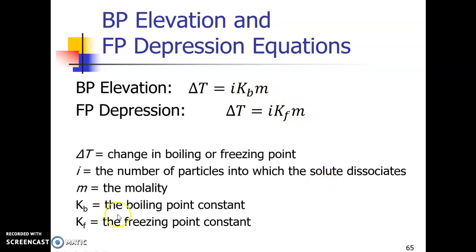The m's are the molality, and then these the Kb and the Kf are constants. So as you might guess, the Kb is the boiling point constant. Kf is the freezing point constant. And basically what those tell you is how much the temperature changes per molal change in concentration.